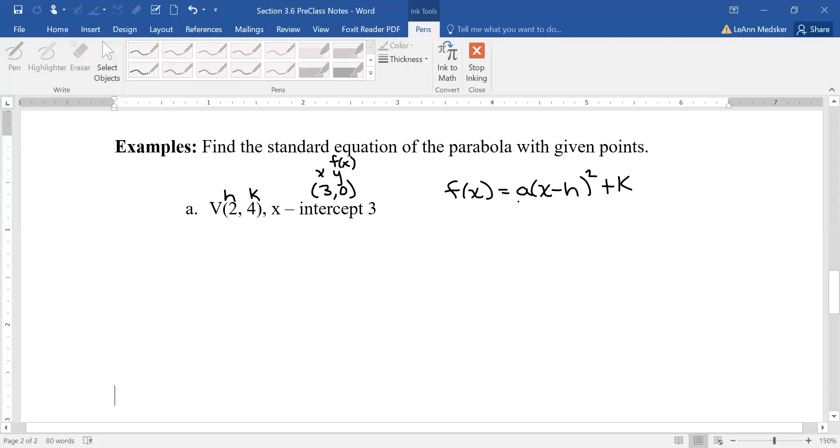Once we have a, we'll also have our h and k, we can write the final answer with the numbers in for a, h and k. So first step, f(x) here is 0, a we don't know, x was the 3 minus the 2, because you always subtract, so this always ends up being an opposite sign when we plug it in, and then exactly your k, so plus 4. Now to solve this I would work out order of operations, so we have that is a 1 squared plus a 4, that is just 1a, so that's just a + 4, and that means a is equal to negative 4. So now I know my h and my k and my a, so my final answer is f(x) equals -4(x - 2)² + 4.